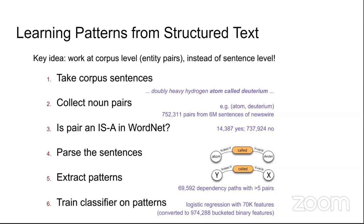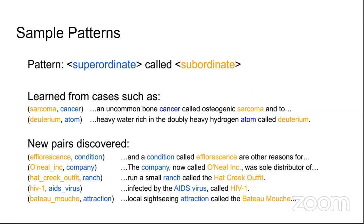Once you have collected noun pairs, check if a pair appears in WordNet, then parse the sentence. For example, 'atom is called deuterium' — find the two noun pairs and the relationship between them, and extract those patterns. Once dependency paths are extracted, train a classifier on these patterns to get a model that can correctly predict even unseen observations.